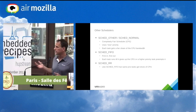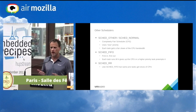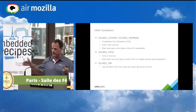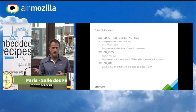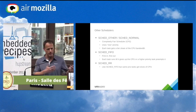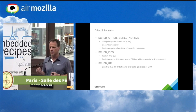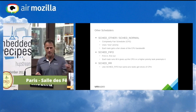Then there's SCHED_FIFO. SCHED_FIFO is a real-time task. It has 100 priorities, so you can actually tell a task it's priority 1, 2, 3, all the way up to 100. The higher the number, the higher the priority. There is no task sharing for SCHED_FIFO tasks. When the highest priority task runs, it will run until it gives up the CPU, or a higher priority task comes in and preempts it.